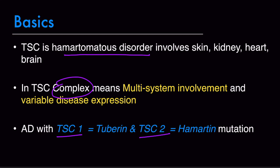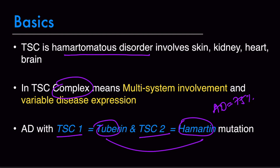TSC1 is also called tuberin and TSC2 is also called hamartin. In 75% of cases, these mutations are spontaneous. Tuberin and hamartin form a complex and negatively regulate the mTOR signaling pathway. When mTOR signaling is negatively regulated, there is abnormal cellular differentiation, proliferation, and migration, resulting in multiple hamartomas. This is the exact reason that in patients with tuberous sclerosis complex, mTOR inhibition by rapamycin or similar agents can have therapeutic benefit.